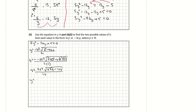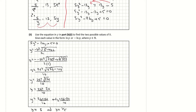Tidying up: 676 minus 100 is 576, so y equals 26 plus or minus the square root of 576 over 10. The square root of 576 is 24, so y equals 26 plus 24 over 10 or y equals 26 minus 24 over 10. That gives y equals 5 and y equals 1 over 5.